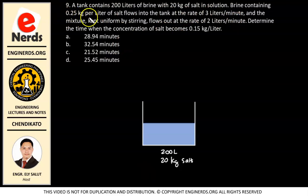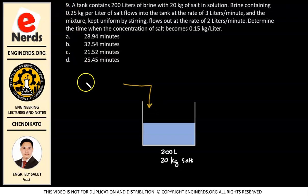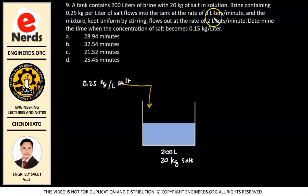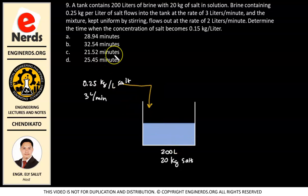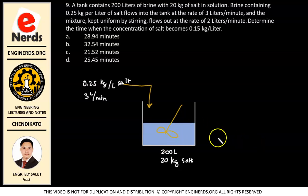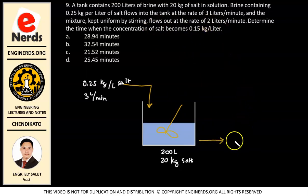Brine containing 0.25 kilograms per liter of salt flows into the tank, coming in at a rate of 3 liters per minute. The mixture here is kept uniform by stirring, so the concentration inside will be the same as the concentration flowing out. It flows out at the rate of 2 liters per minute.